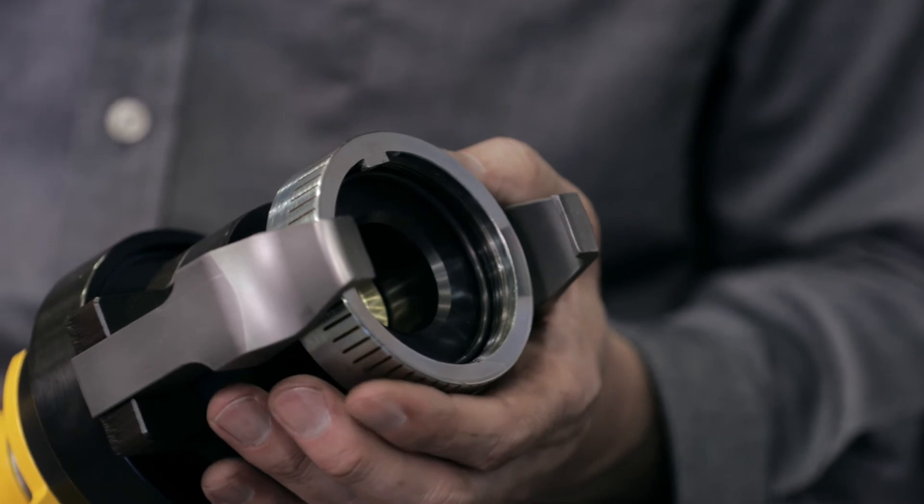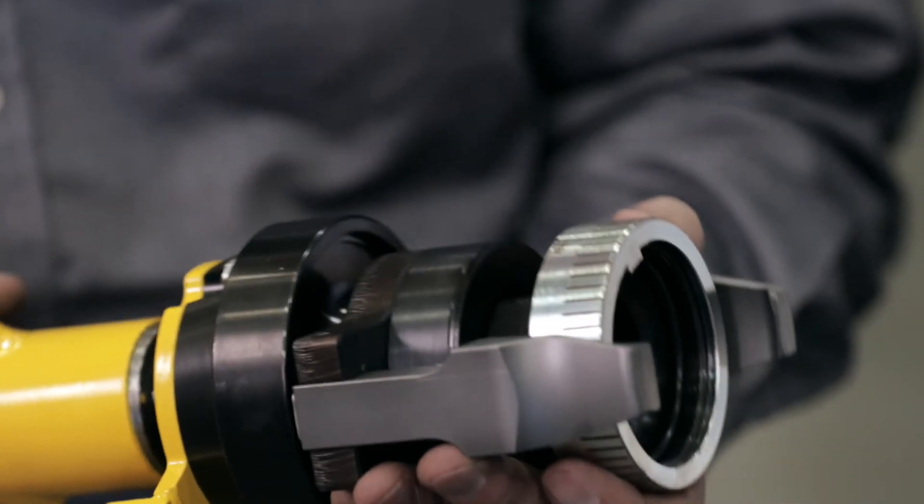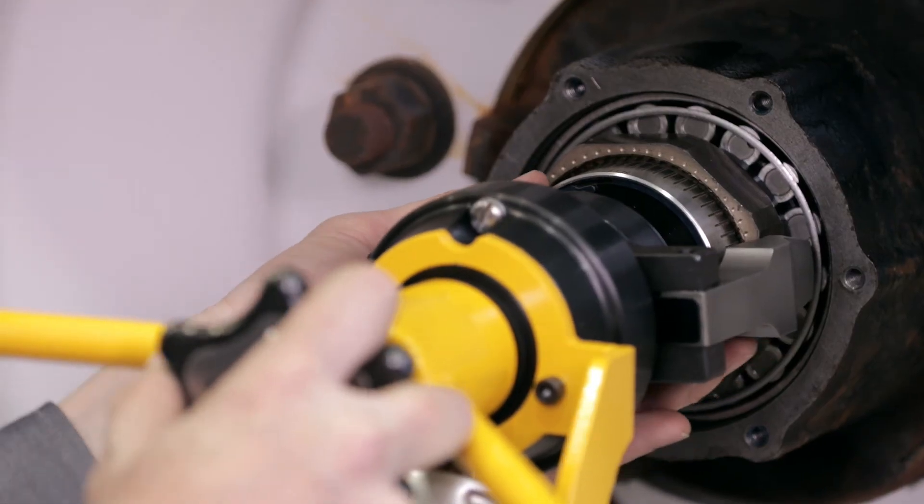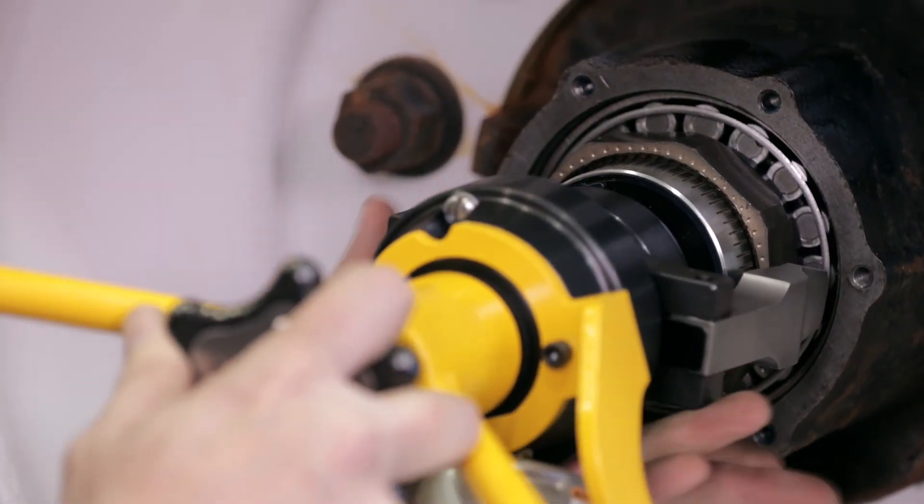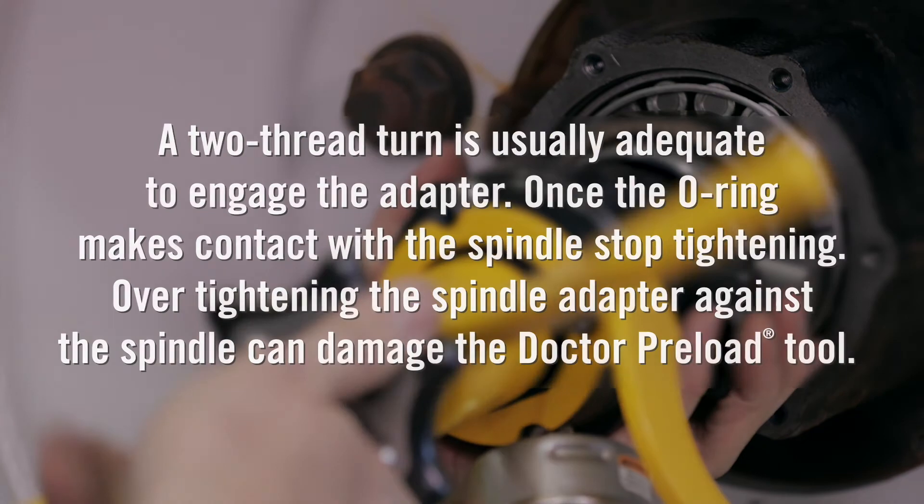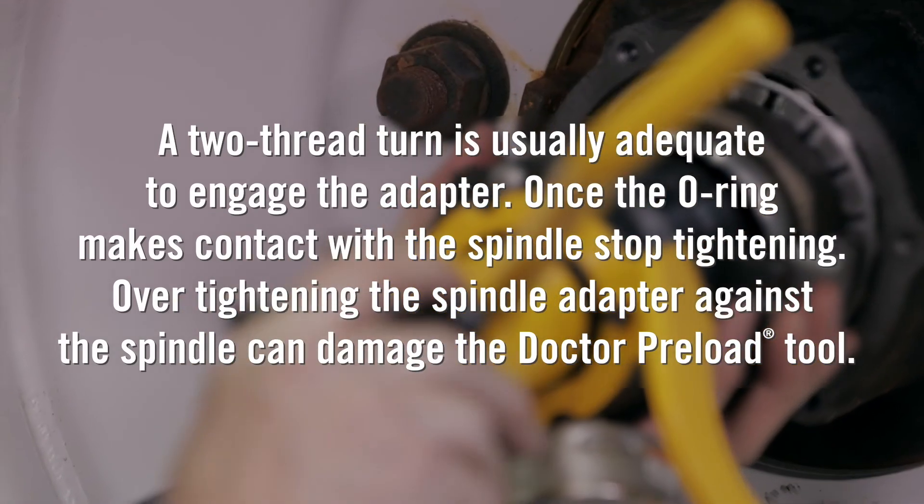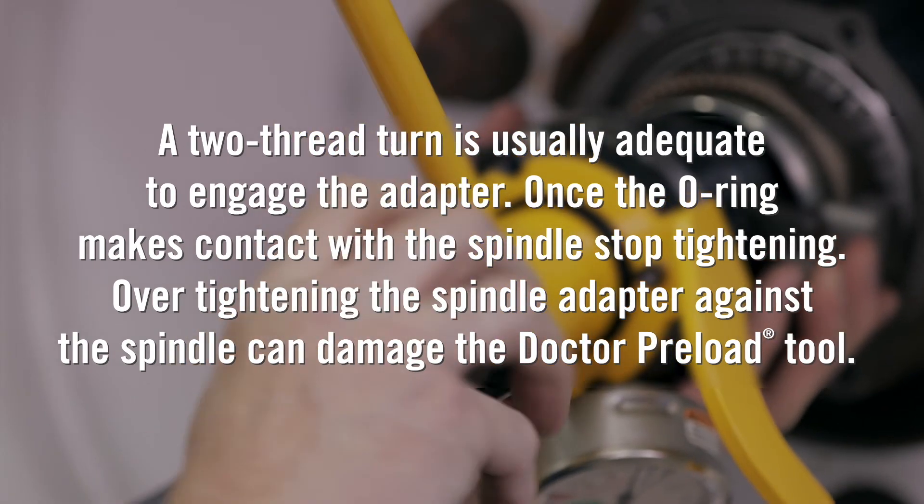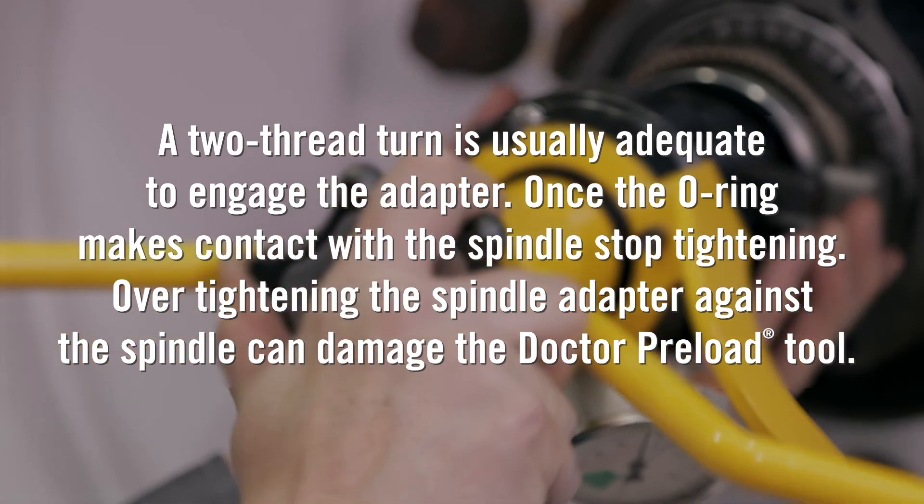Rotate the circular key finder until the key is approximately lined up with the key way. Using a sweeping motion, guide the spring-loaded load arms around two flat sides of the nut. Be careful to avoid the points of the nut for secure attachment. Then, slightly rotate the circular key finder until the key is engaged in the key way.